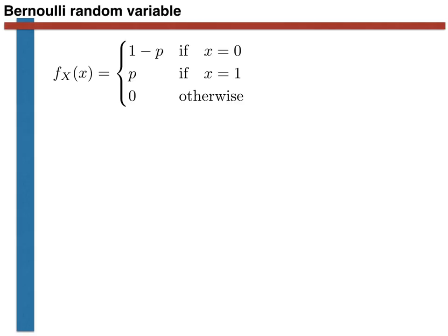A Bernoulli random variable is a discrete random variable that can take one of two values, 0 or 1. The probability mass function for a Bernoulli random variable is shown at the top of this slide. As you can see, the probability that we would get a 1, a success, is p, and the probability that we would get a 0, or a failure, is thus 1 minus p, because the variable cannot take any other value.